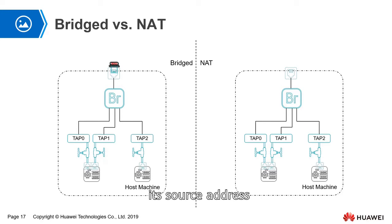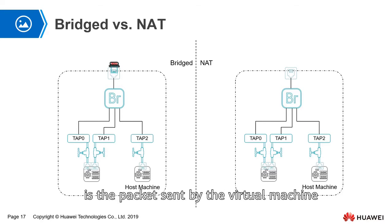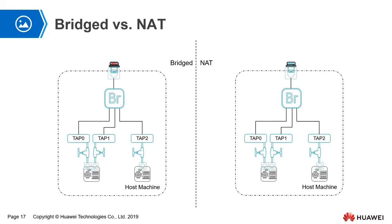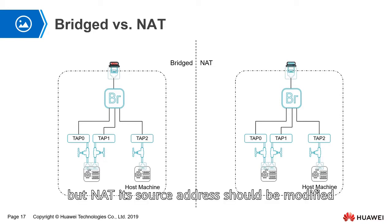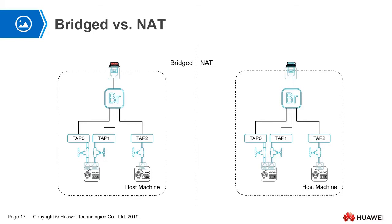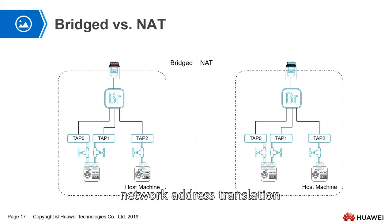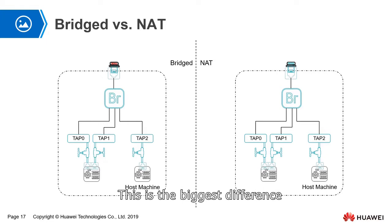The biggest difference between bridge and NAT is that there is some difference in the source address. In bridge, the source address of a packet sent by the virtual machine is not modified. Looking at this diagram, the source address is always shown in red with no modification. But in NAT, the source address should be modified. The full name of NAT is Network Address Translation, so the source address should be replaced. This is the biggest difference between bridge and NAT.